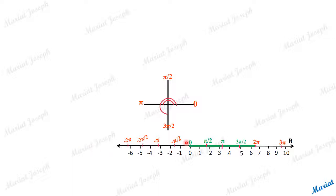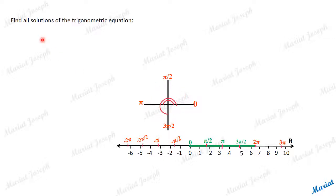The solutions of the trigonometric equations we are going to consider will be marked and observed on this number line, depending upon the angles the solutions give. Let's go with the first one: find all solutions of the trigonometric equation sin x = 0.